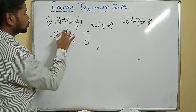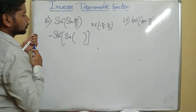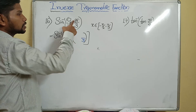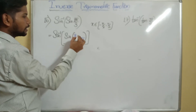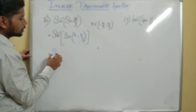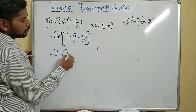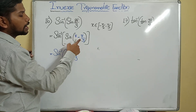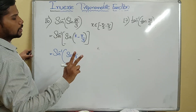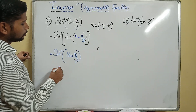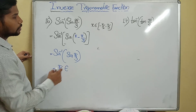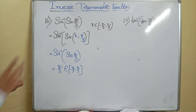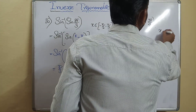I write 2π/3 as π − π/3, because the nearest multiple of π is 1×π. Sine inverse of sin(π − π/3): since π minus an angle is in the second quadrant, sine is positive there. So sine(π − π/3) = sine(π/3). Then sine inverse of sine(π/3) = π/3, which belongs to [−π/2, +π/2]. Correct.